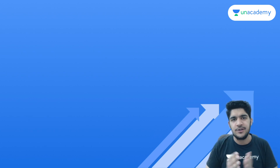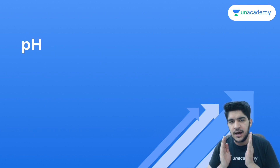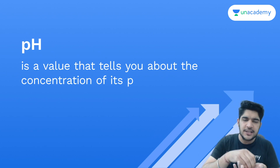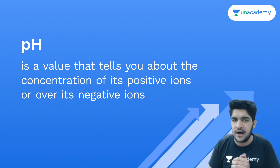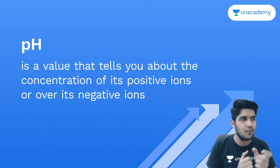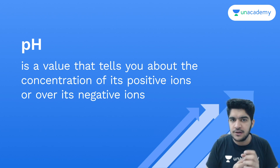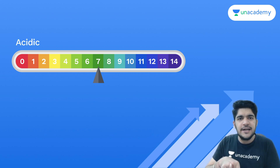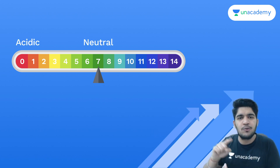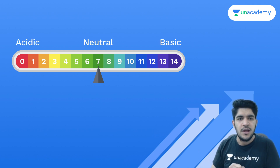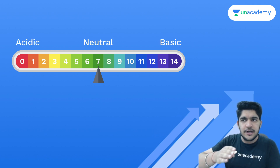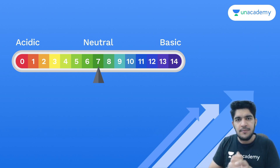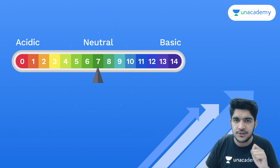What is pH? pH is a value that tells you about the concentration of H-positive ions and OH-negative ions. When H-positive ion concentration is more, it is acidic; when OH-negative concentration is more, it is basic. And when the concentration of H-positive and OH-negative is the same, we have a neutral solution.